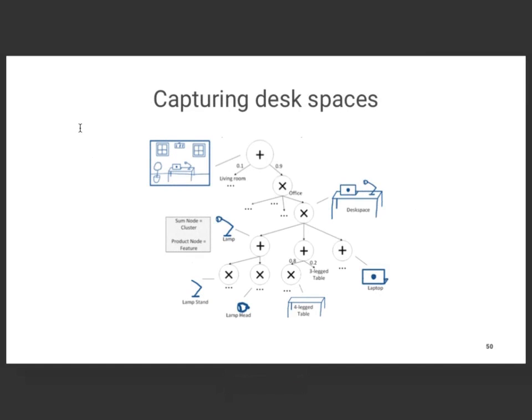For a more intuitive example, imagine constructing a sum-product network that defines what it means to be an office space. An office space typically has windows, a lamp, and a desk. The sum-product network learns different compositions — mixtures of what it means to create a lamp, have a laptop, have a table, or have a laptop on a table. Each leaf node stands for a certain feature being true or false, so it's learning weighted sums of features.